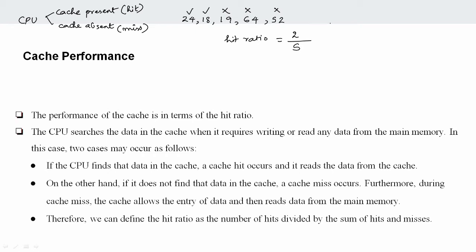So the hit ratio is the formula. The hit ratio is number of hits divided by total accesses. If you take the cache hits divided by total cache accesses, the hit ratio formula remains the same.